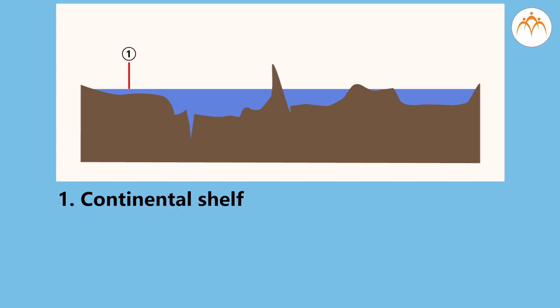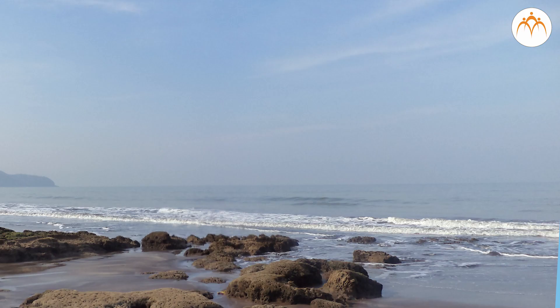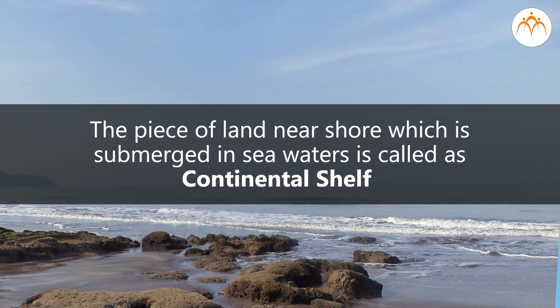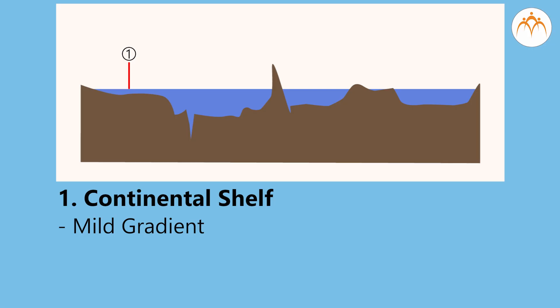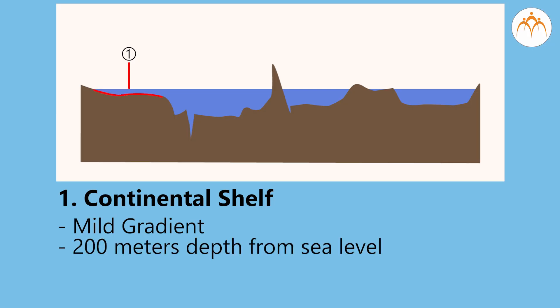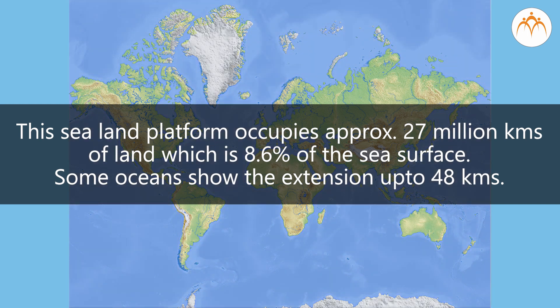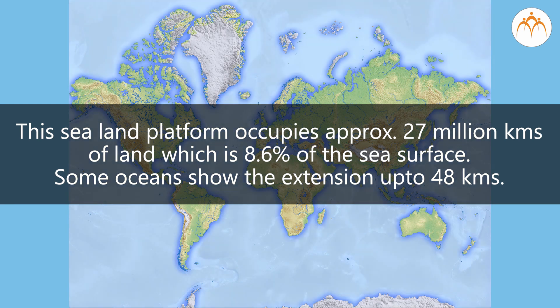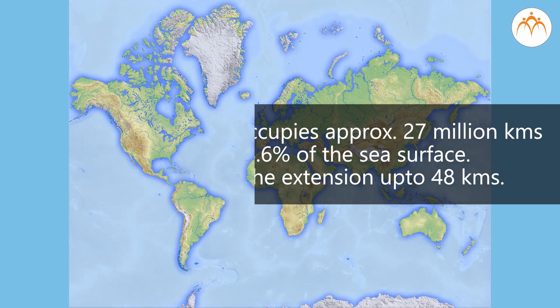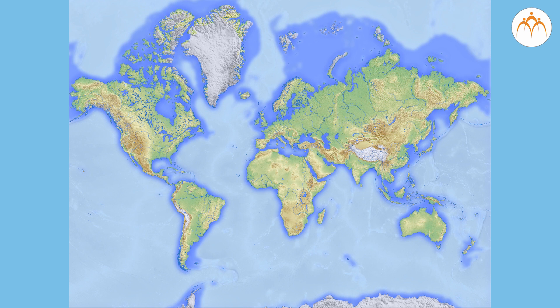Continental shelf: This part of the ocean is widely known and easily accessible. The piece of land near shore which is submerged in sea waters is called the continental shelf. The gradient is mild. The depth is around 200 meters from the sea level. This sea landform occupies 27 million kilometers of land, which is 8.6 percent of the sea surface. Some oceans show the extension up to 48 kilometers, while at some places it is narrow and at others the breadth is hundreds of kilometers.